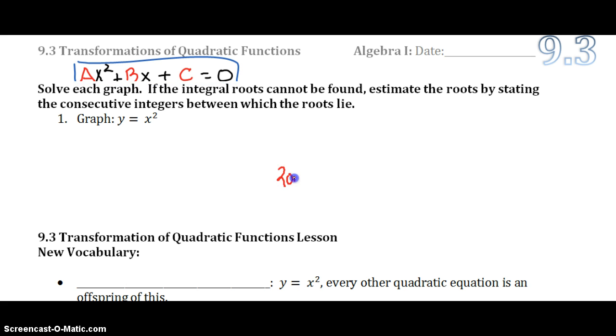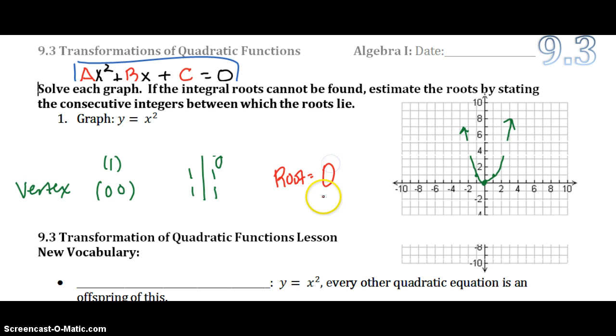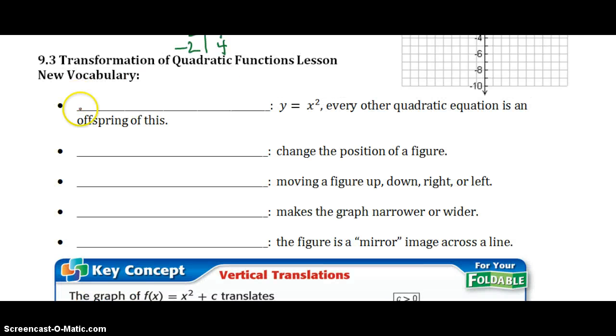By the way, what's the root? The root is 0. This is called the parent graph. The parent function or the parent graph when y equals x squared. Every other quadratic equation is an offspring of y equals x squared.